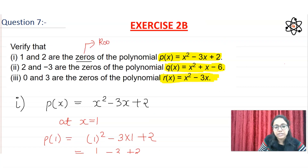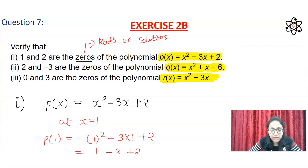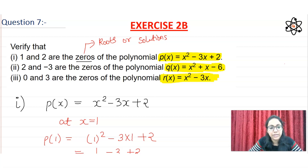We can use the words zeros, roots, or solutions — all are correct. If you have kept the value in the polynomial and it gives 0, then that value is a zero. It means it will satisfy the polynomial and give 0 value.